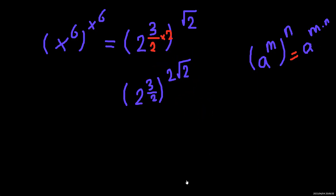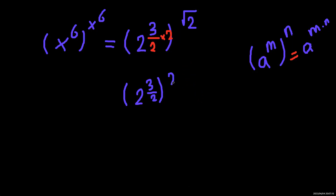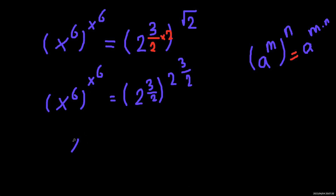So now we can write the right-hand side as 2 to the power of 3 over 2 as well. As you can see, the right-hand side is now in the same form as the left-hand side. We've managed to write both sides in a matching form, so by comparison we understand that x to the power of x to the power of 6 equals 2 to the power of 3 over 2.